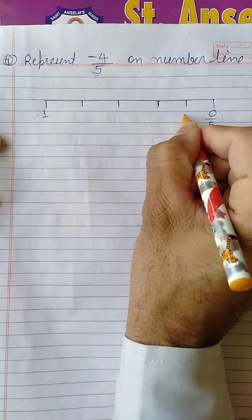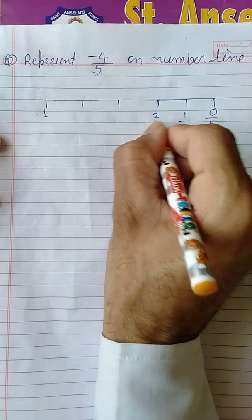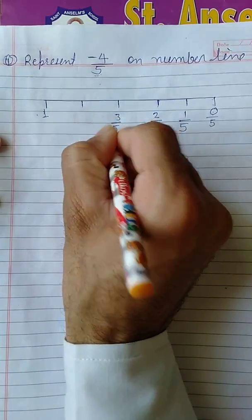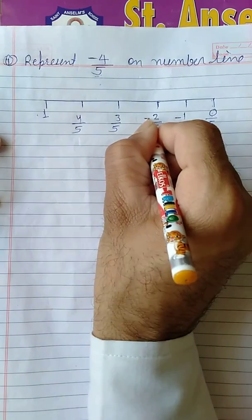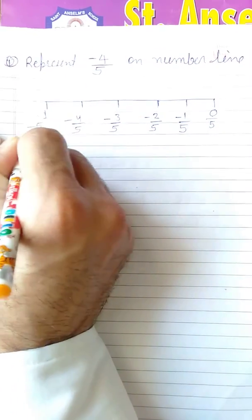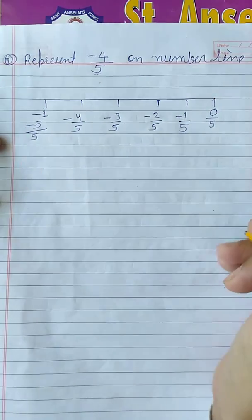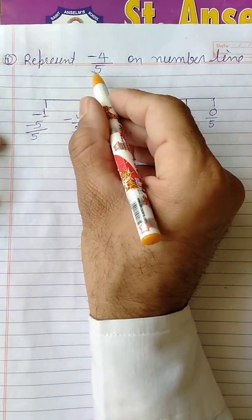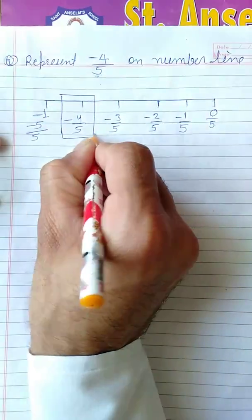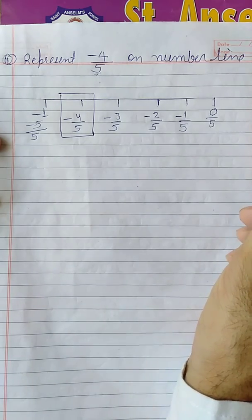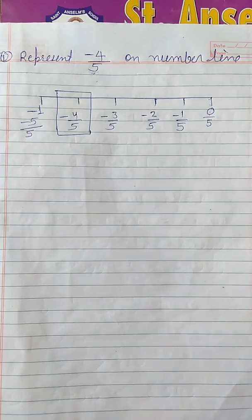One, two, three, four, and five. Right, so out of these numbers, this first one is zero upon five, this is one upon five, this is two upon five, then three upon five, then four upon five, and all are negative. Minus one, minus two, minus three, and this final is minus five upon five means minus one. Because negative side we are taking. We wanted to represent minus four upon five - we have represented already, this is minus four upon five. This is the way to represent a number.